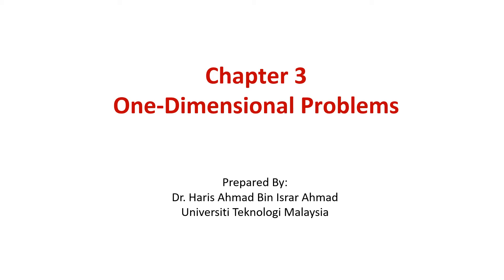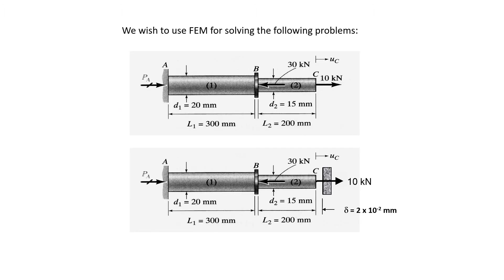Chapter 3 is the beginning of the FEM method. We start our FEM class with a simple problem, which is a 1D problem. In this chapter, we wish to use FEM to solve this kind of problem, which is a 1D bar applied by loads and then having displacement in one direction only — either in X or in Y direction.